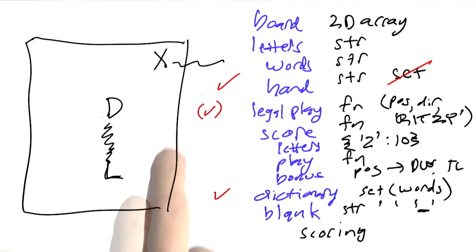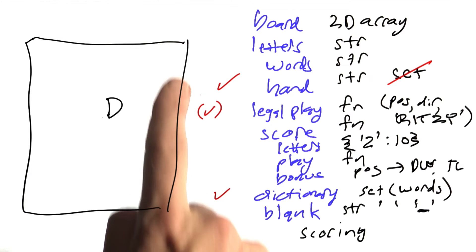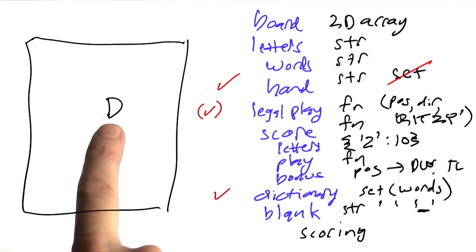We're just going to say, what words can I make out of my hand that connect with either a D or an X or an L? I need a strategy for that and let's just consider one letter at a time.